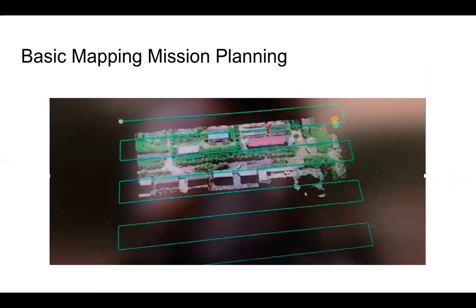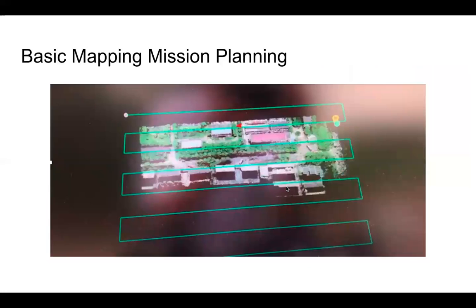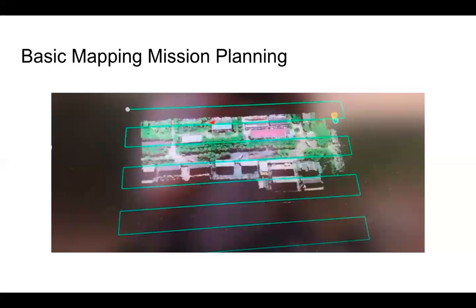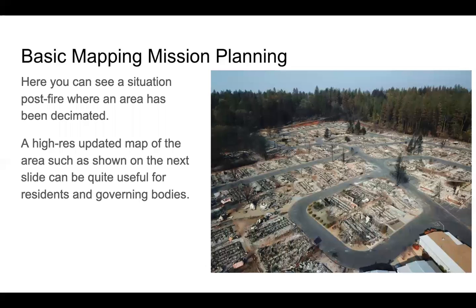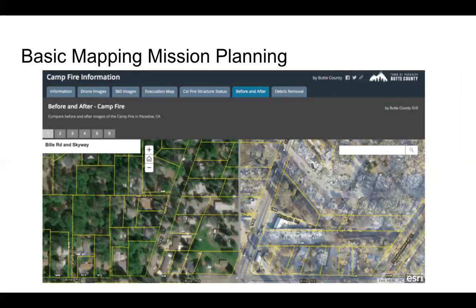Here's a quick example of a mission flight — it's a lawnmower pattern going back and forth. You see the red airplane representing the drone, and as the drone proceeds and takes more pictures, the map expands as those photos are stitched in. In the real world, this is useful for things like post-fire area mapping in California, where a high-resolution map helps compare before and after. Accident reconstruction is another useful case.